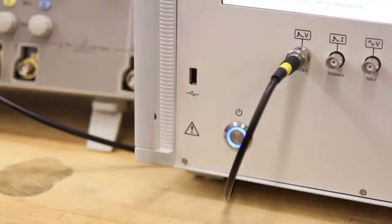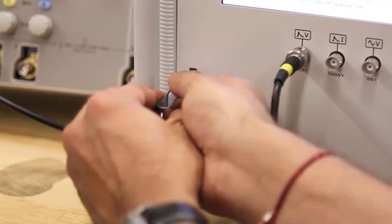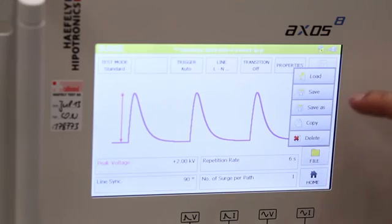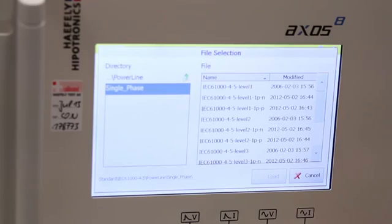In order to gather test data, a USB flash drive must be inserted into the USB port. Once test setup is complete, you can save a file by selecting file and save or save as function. Additionally, a file can be loaded from our built-in standard test library.